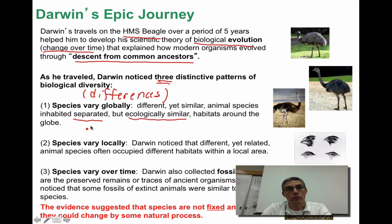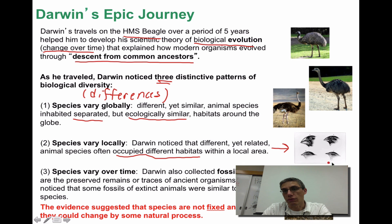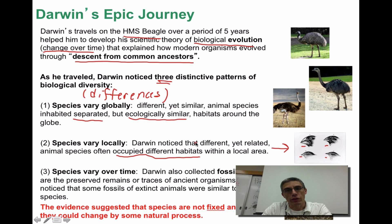The second thing Darwin noticed was that species vary locally — different yet related animal species often occupy different habitats within the same local area. In the video Darwin's Dangerous Idea, he discussed the finches of the Galapagos and how each finch developed a different type of beak based on their feeding behavior. That's a good example of how species vary locally: a very confined habitat with finch species that, because they feed on different things, evolved different beaks to benefit from the type of food available.